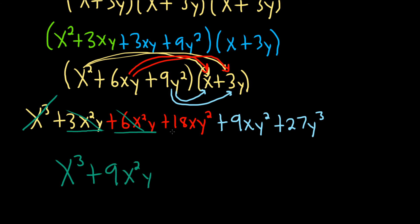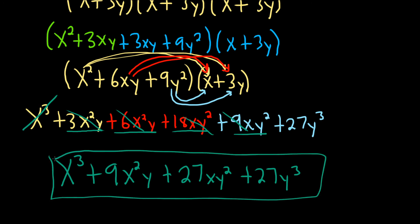And then 18xy squared and 9xy squared would give us 27, right? Yeah, 27xy squared. And then we have plus 27y cubed. And that would be the final answer to this problem.